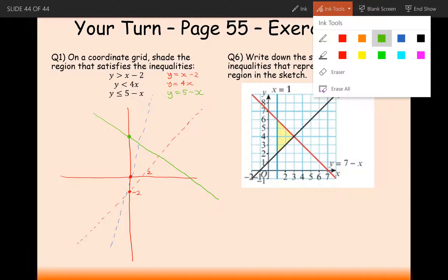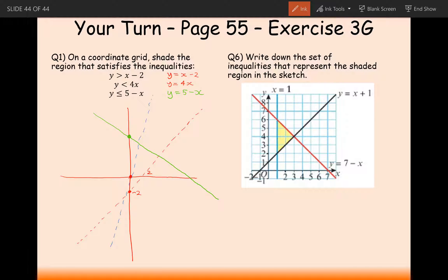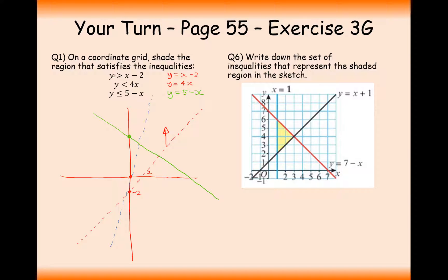Now consider whether we're above or below each line. For the first inequality, y is greater than x minus 2, so we want to be above that line. For the second, y is less than 4x, so we want below it. For the green line, we want to be below it as well. The intersection of all these regions gives the shaded region.